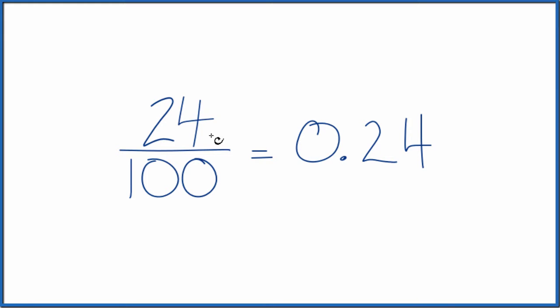So the fraction 24 over 100 equals the decimal 0.24. Another way we could do this is recognize that we have 100 in the denominator. And then we could move the decimal point to the left one, two places.